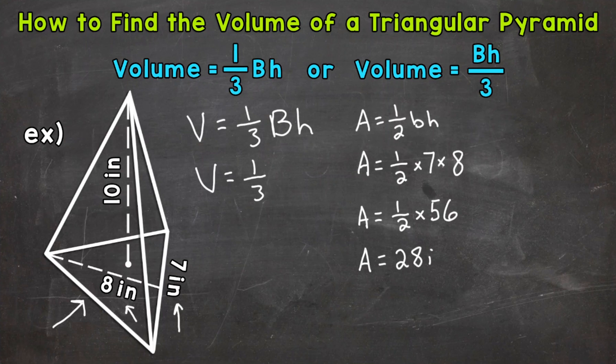So the area of the base is 28 square inches. So let's plug that in. Times the height of 10 inches. And now we're ready to solve here. So 1 third times 28 times 10, that's going to give us the volume of this triangular pyramid.